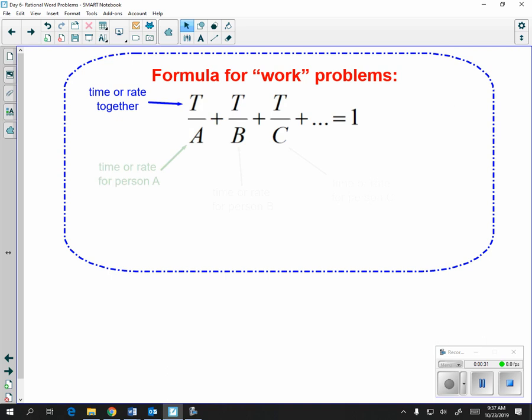The denominators represent the time or rate for person A, the time or rate for person B, and the time or rate for person C. So when they're working on it together, it takes them two hours, that goes up top. But individually it takes me five hours to do something, but it takes my friend four hours to do something. The five and four would be the denominators of both of those fractions.